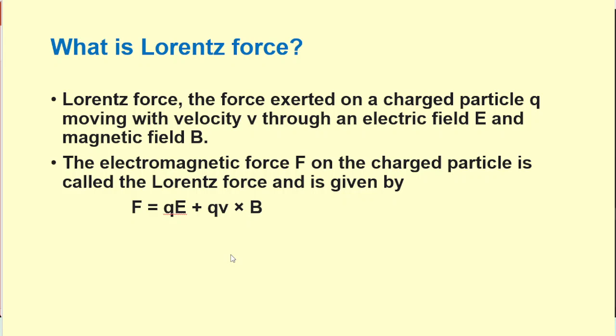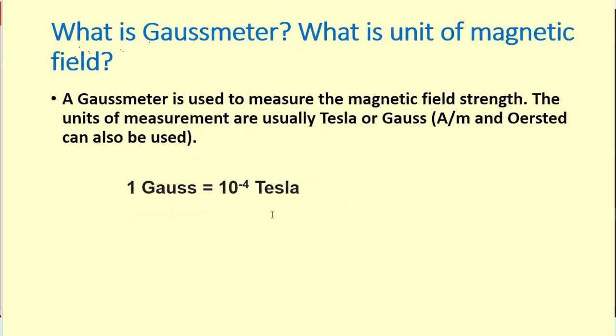So what is the Lorentz force? Lorentz force is the force exerted on a charge particle Q moving with velocity v through an electric field E and magnetic field B. So the electromagnetic force on a charge particle is called the Lorentz force, and this is given by F equals QE, that is the electric force, plus Q v cross B, that is the magnetic force. What is Gauss meter and what is the unit of magnetic field? A Gauss meter is used to measure the magnetic field strength, and the unit of measurement of magnetic field are tesla or gauss. And 1 gauss equals 10 to the power minus 4 tesla, or 1 tesla equals 10 to the power 4 gauss.